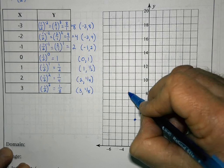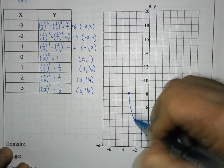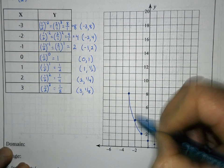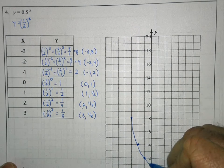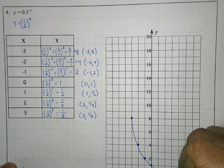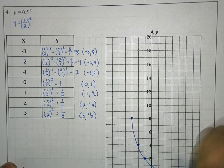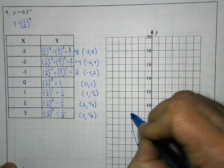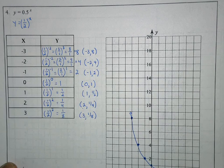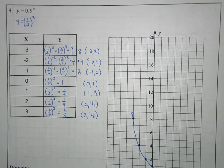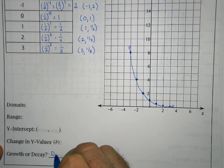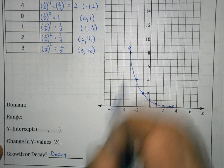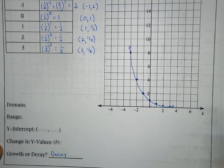Now we get an idea of what the graph looks like. It's definitely not a straight line — it's a smooth curve, which is what we should expect because exponential functions always produce a smooth curve when graphed. This is a decay graph because as we read from left to right, the graph is going down. Although the question didn't require it, we would identify this as exponential decay.